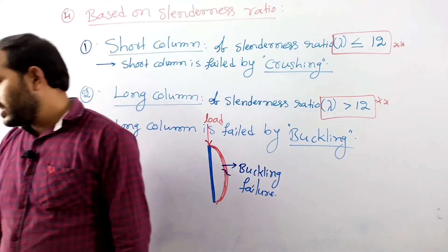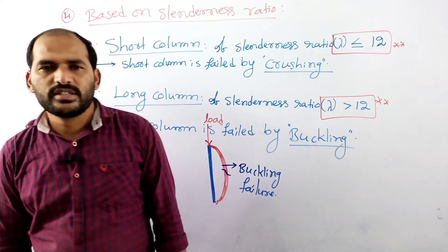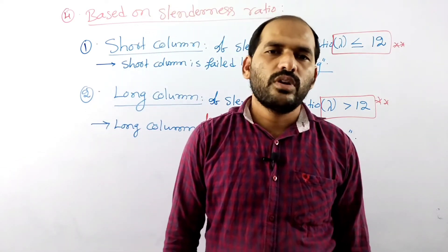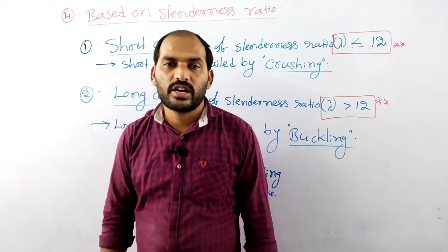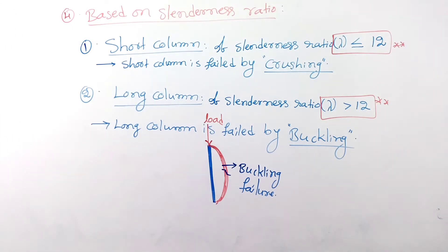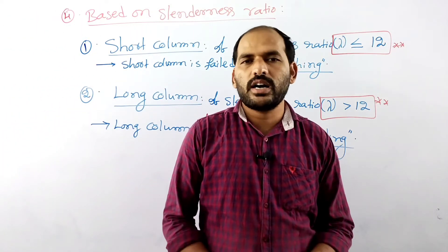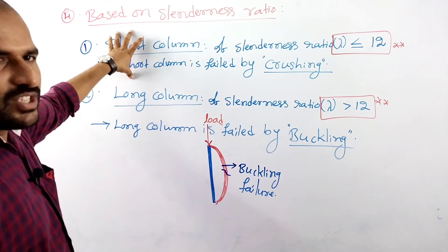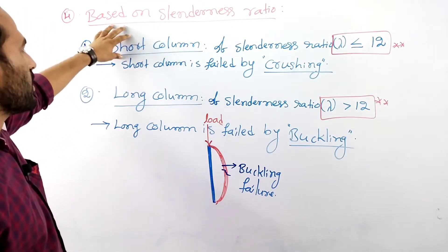What is meant by slenderness ratio? It is defined as the ratio of effective length of the column to the least lateral dimension. Based on the slenderness ratio, columns are classified as short column and long column.